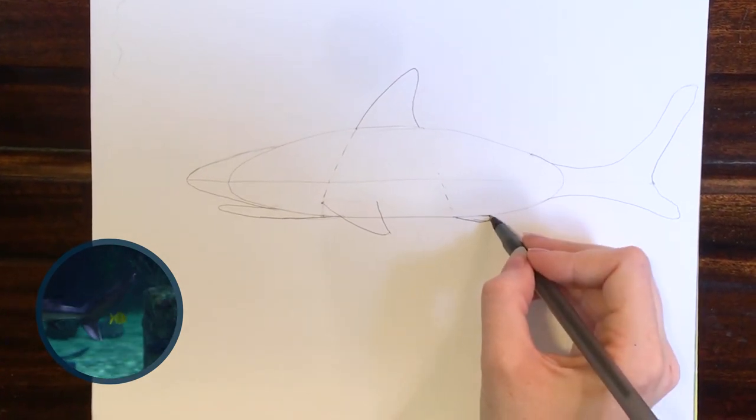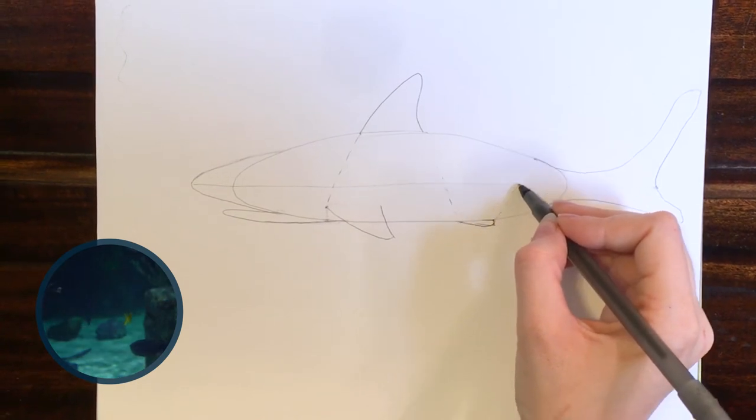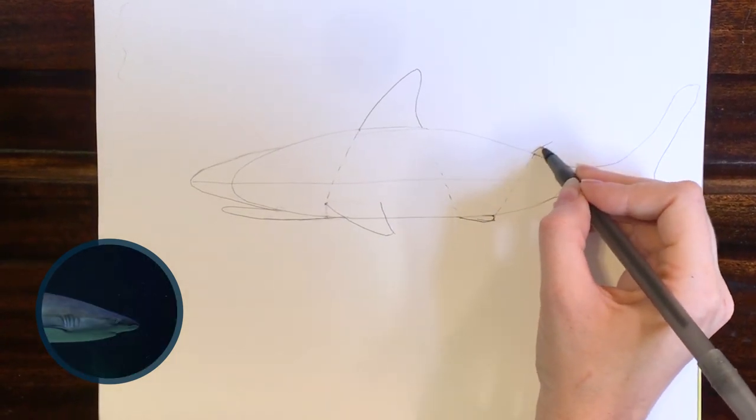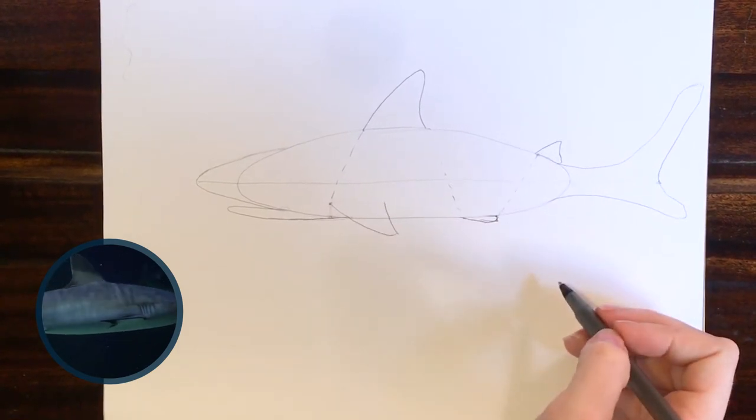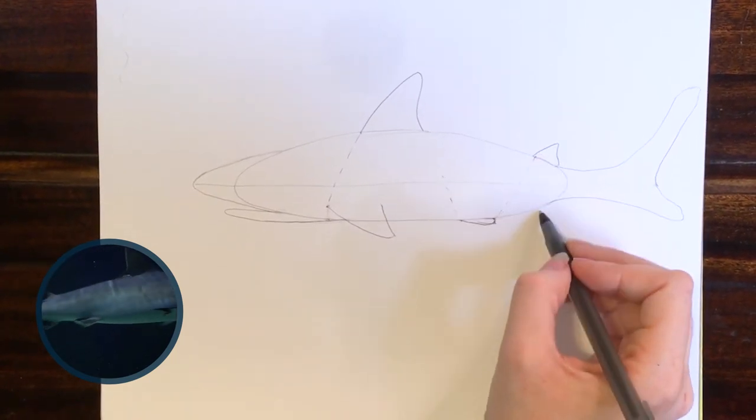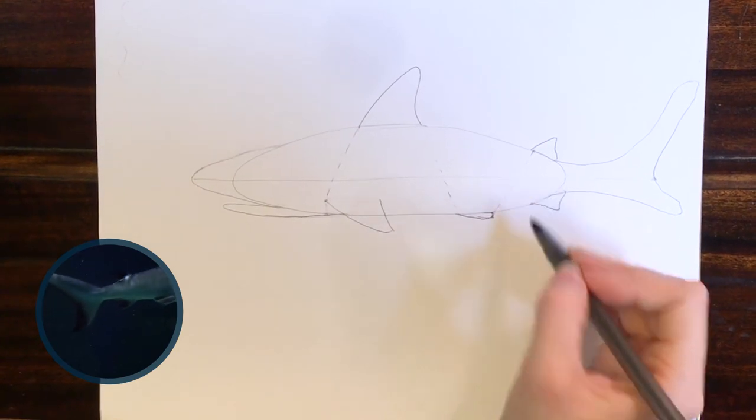Now from the pelvic fin, we come back up again just like with the other ones, and there is our smaller second dorsal fin. And the good news with the anal fin is it's really easy—you just go straight across and there's your anal fin.